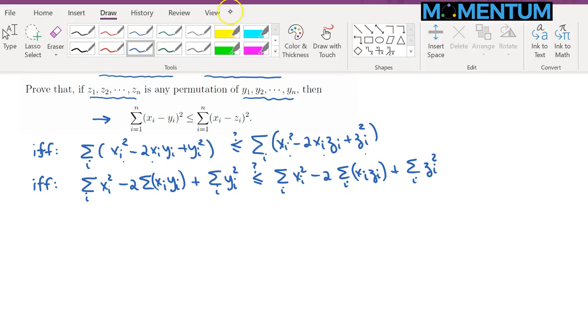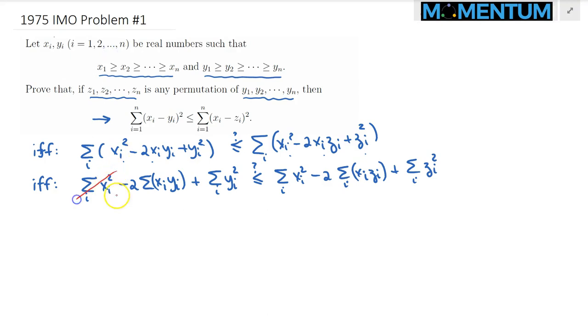Well, it's clear that the summation of x sub i squared terms, they just cancel. And even these two terms, do you guys agree that they also cancel? Simply because, like we said earlier, the z sub i's are just a permutation of the y sub i's. So it's just a rearrangement of those. As a result, those two also cancel.